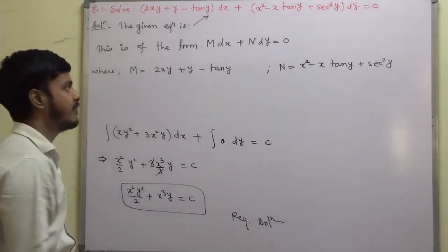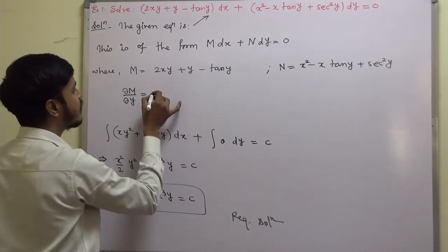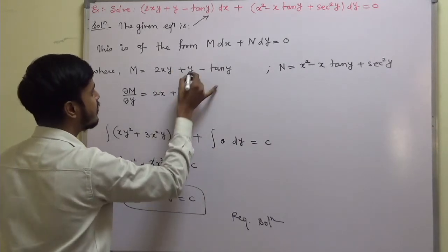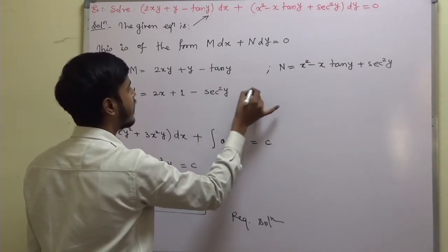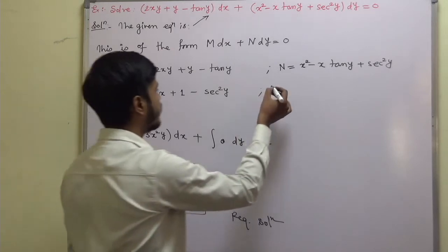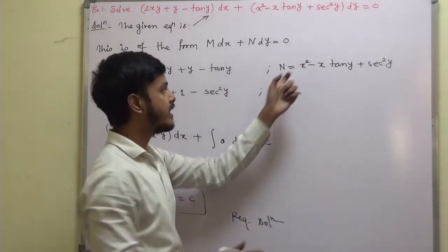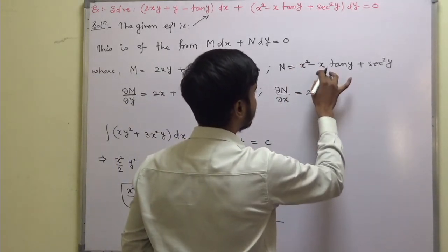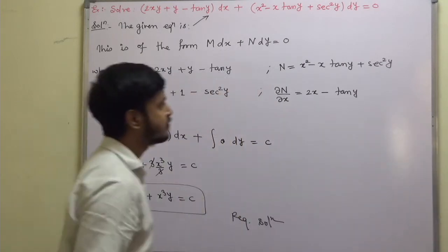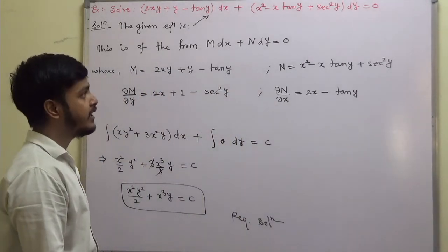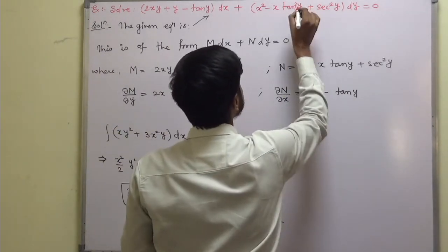With M and N identified, find del M by del y. Del M by del y is: derivative of 2xy with respect to y is 2x, derivative of y is 1, and derivative of tan y with respect to y is secant squared y. So del M by del y equals 2x plus 1 minus secant squared y. And del N by del x: derivative of x squared is 2x, derivative of x tan y is 1 times tan y, and derivative of secant squared y with respect to x is 0.